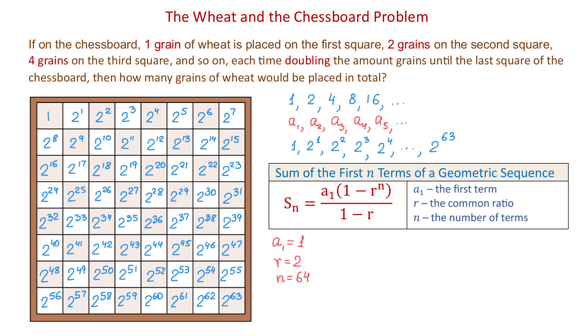Now, we will replace all these numbers in the given formula to find the total number of grains. So, we will have the sum of all 64 numbers equals 1 parenthesis 1 minus 2 to the power of 64 over 1 minus 2. Then here we will use a calculator, and we will use parenthesis around the denominator if needed, and the result will be a big number, and I will write it down.